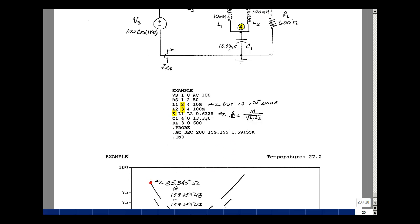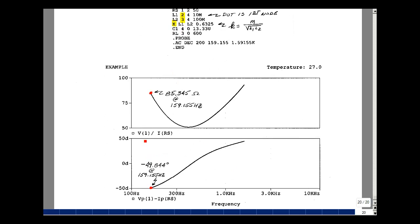So here's our results. I plotted node voltage 1, which is our input voltage, divided by the current in the resistor R sub S. And the magnitude turns out to be 85.345. And we had calculated 85.3. So basically the same result. For the phase angle, let's take the phase angle of the numerator minus the phase angle of the denominator of this ratio. So VP parentheses one, and then IP of R S. I get a minus 49.844, and we calculated minus 49.83. So again, very close to the results. And this is how you do a transformer in SPICE.